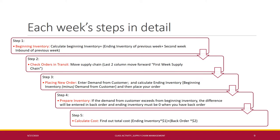Let us now discuss each week's steps in detail. Step 1: calculate the beginning inventory by looking at the ending inventory of the previous week. Step 2: add the quantity of beer cases in the second-week inbound of the previous week. Step 3: check orders in transit — the last two columns move forward, relating to the first-week supply chain. Then place a new order: enter the demand from the customer and calculate the ending inventory as beginning inventory minus demand from customer.